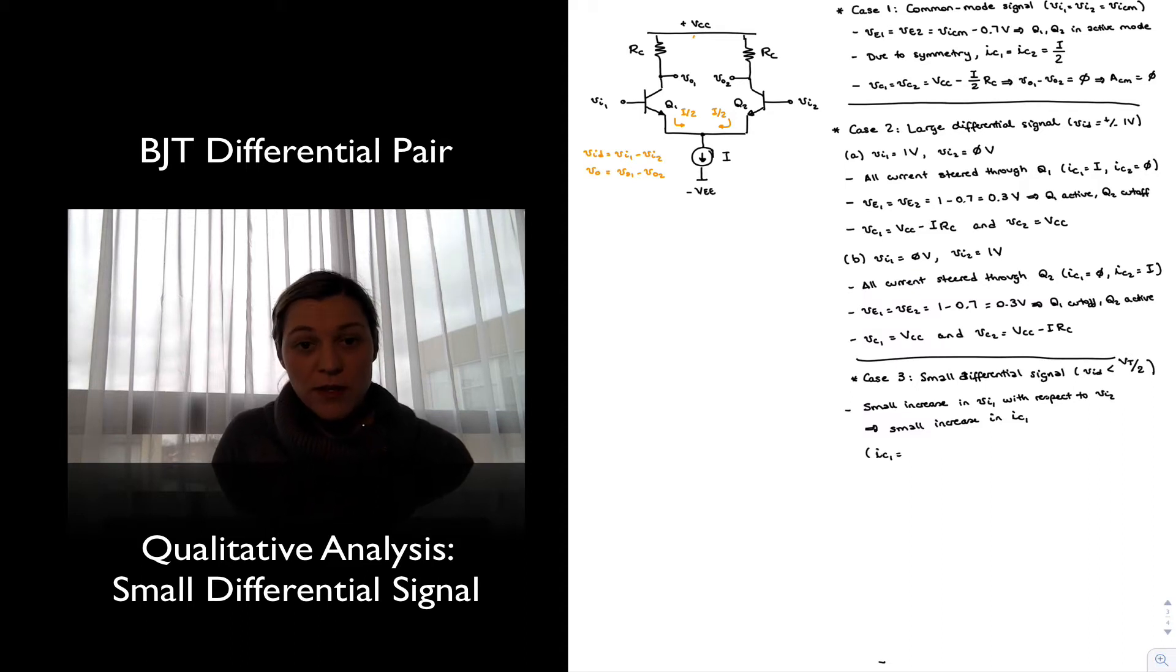Well, I_C1 is going to have its quiescent value of half of the tail current, I/2, that it has when both signals are sitting at the same level. Now, if I increase I_C1 slightly, this current I/2 is going to increase by an amount small delta I_C. And that's going to be the small signal I_C, that delta, that small increase.